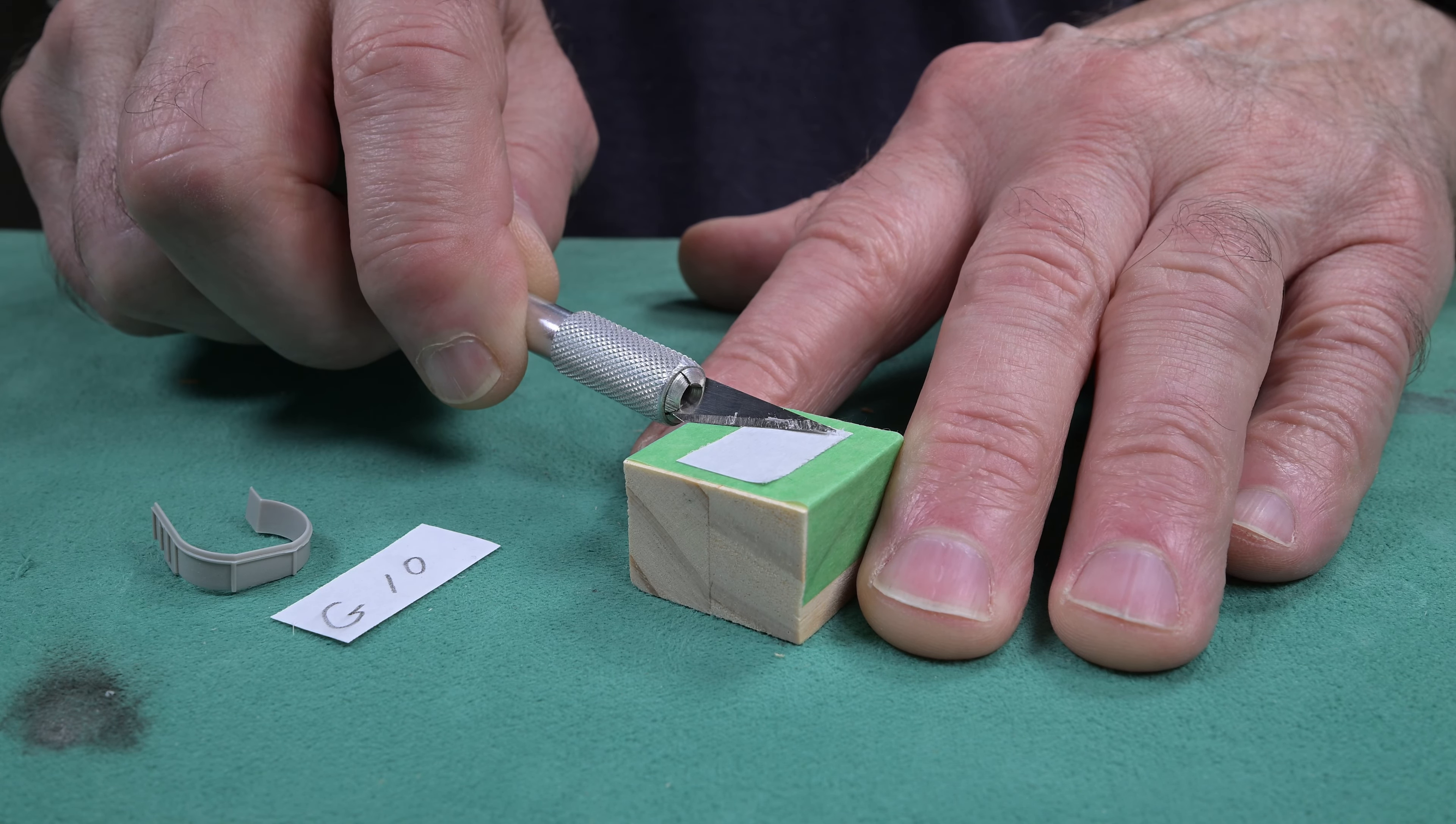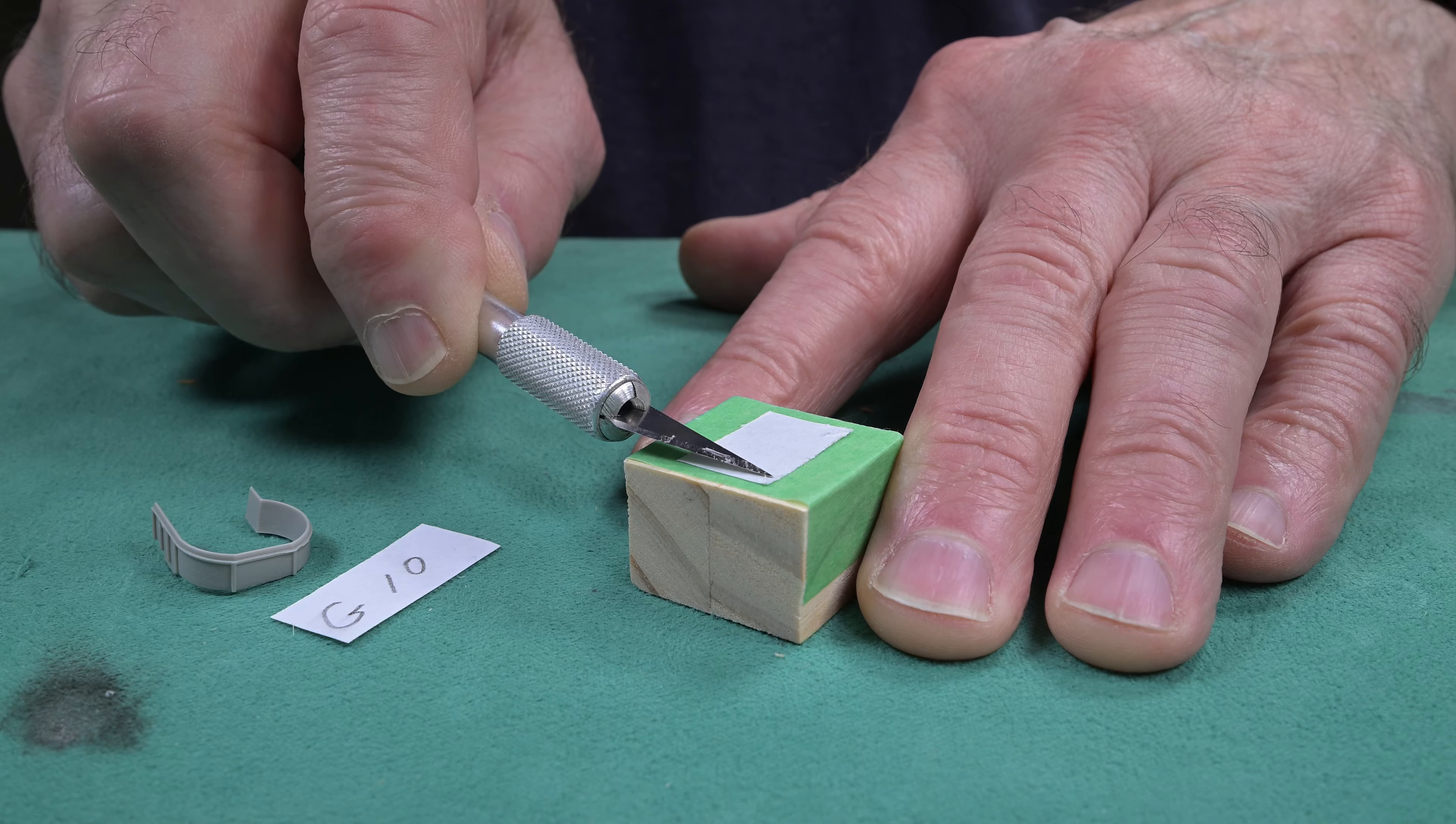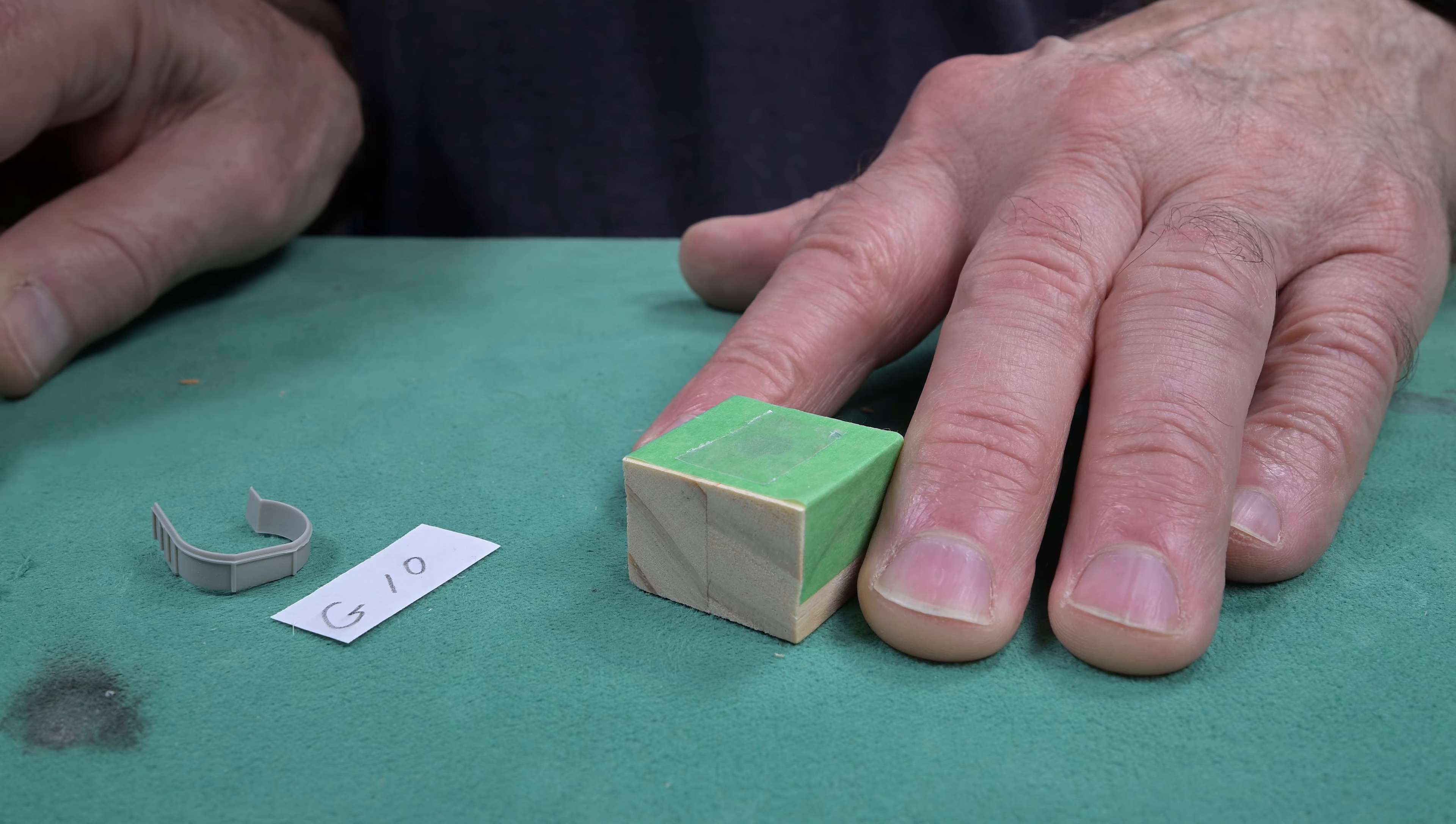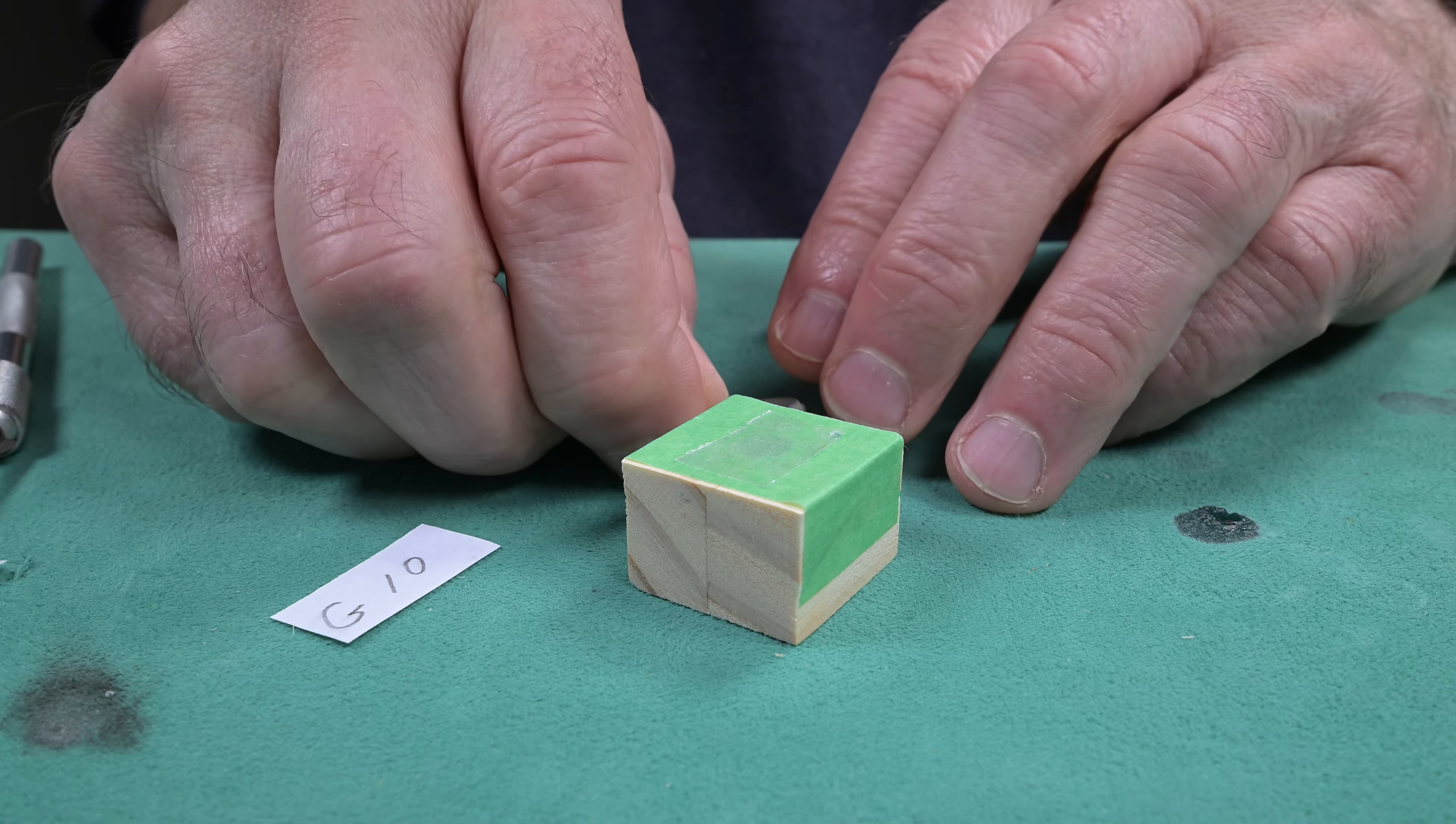Sometimes it works good and sometimes it doesn't. Let's try a different place. You know what, I think I've broken the point off of my knife. Well I guess I have to break into one of those 300 blades. All right, now there's a positioning pin under there, so we can put that in one place.